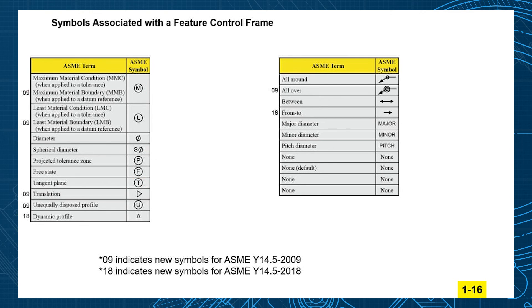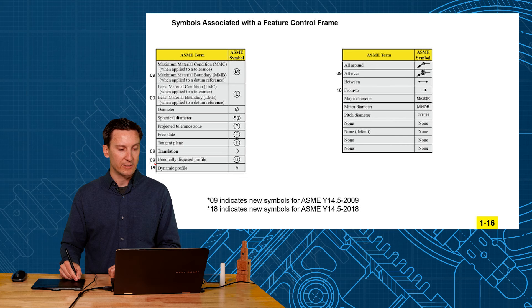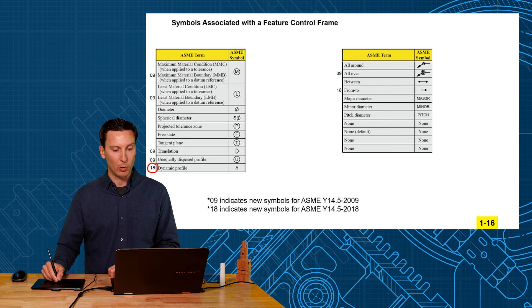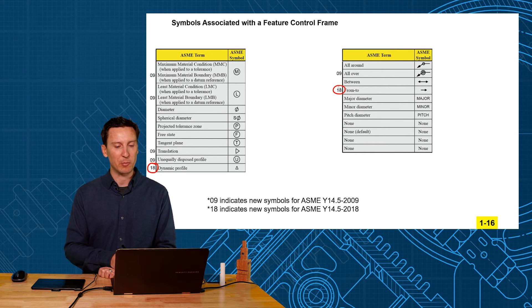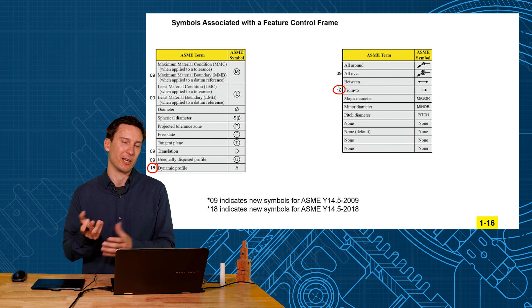I've also shown when they were introduced or modified. In 2009 these were modified a little bit, especially with the datum features - the MMB and LMB. In 2018 we had two new symbols, the dynamic profile and the from-to. These are probably not very common for most people, but they are for specialized applications. You might see them.